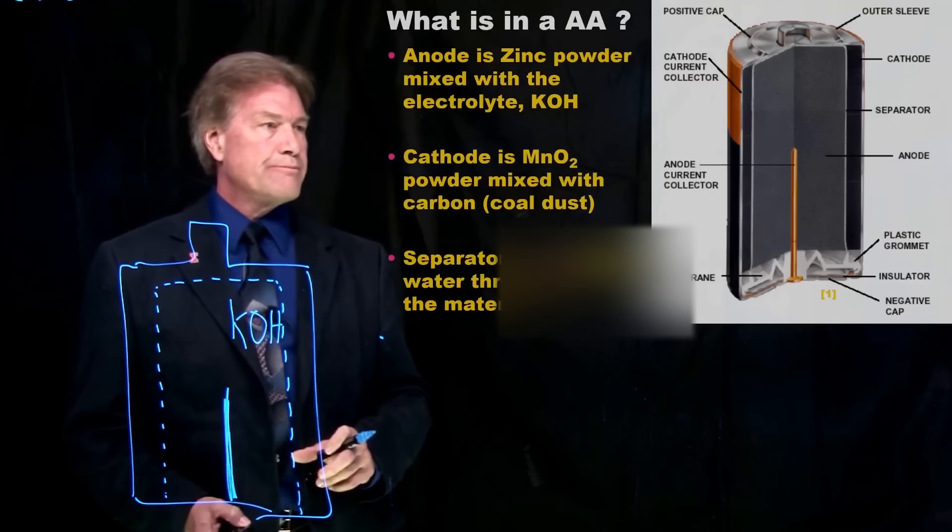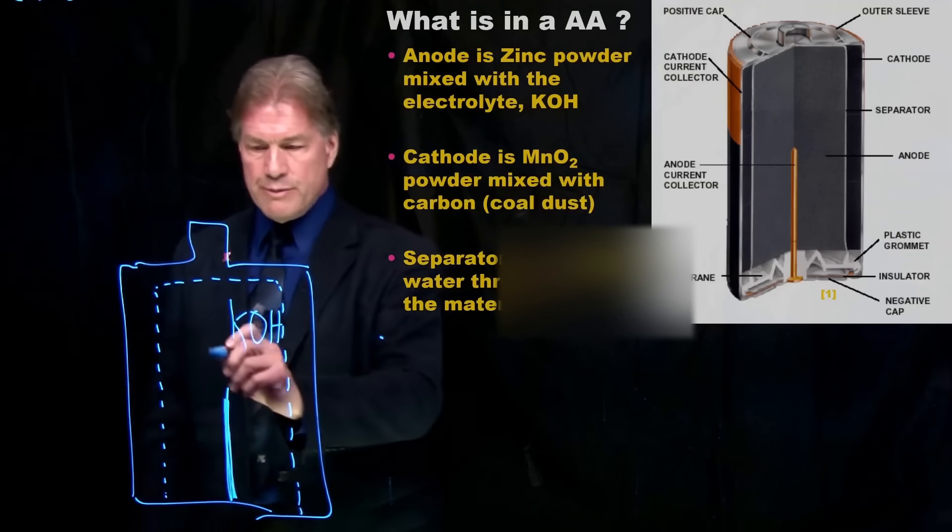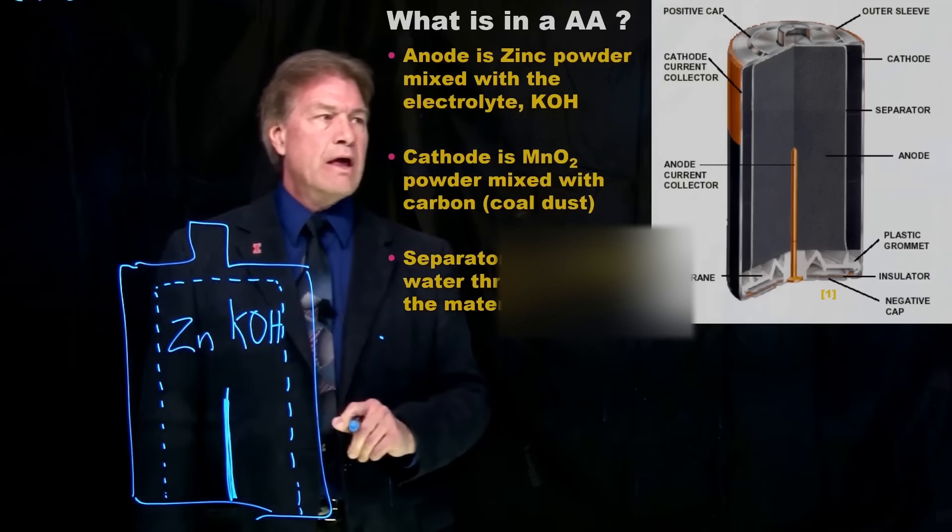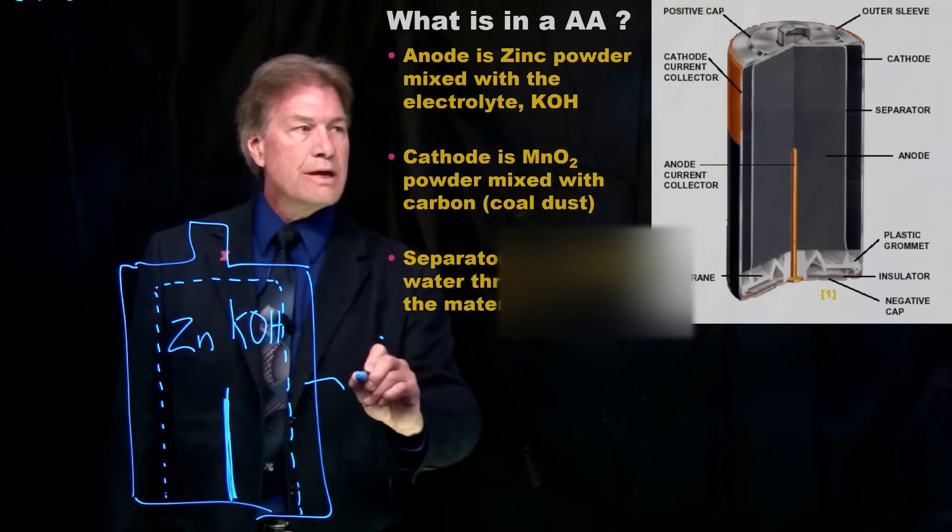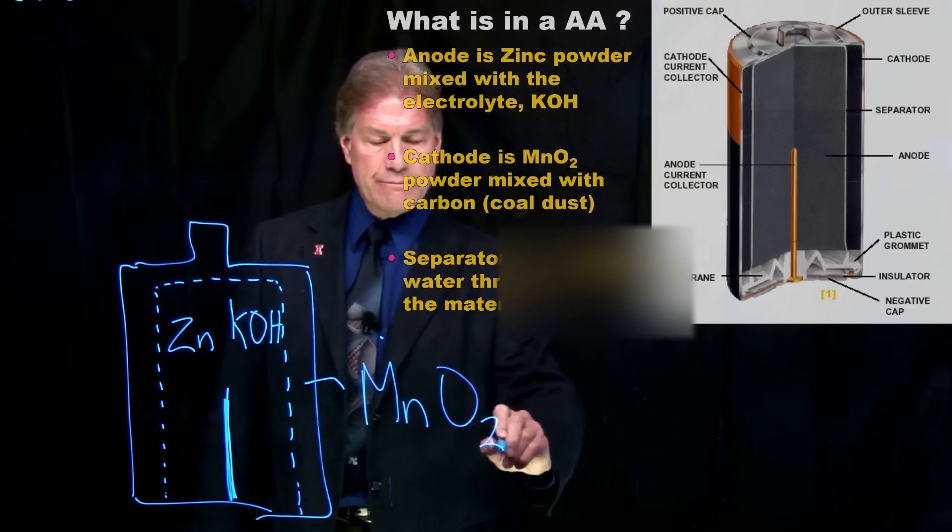Now, what about that black material? Well, the anode, this part in here, is a zinc powder. And the stuff out here, the stuff that's the cathode, well this is manganese oxide.